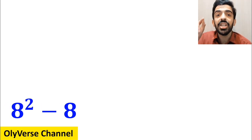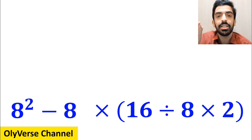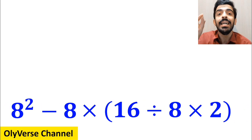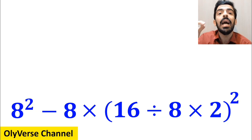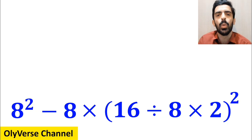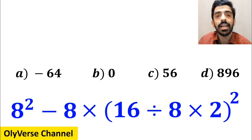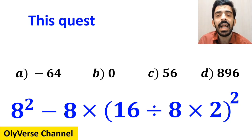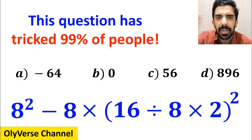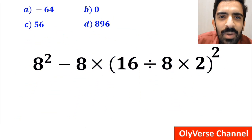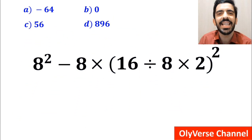What is the value of the expression 8 squared minus 8 times open parenthesis 16 divided by 8 times 2 close parenthesis and all squared? This expression has tricked 99% of people. Let's take a closer look and solve it together.